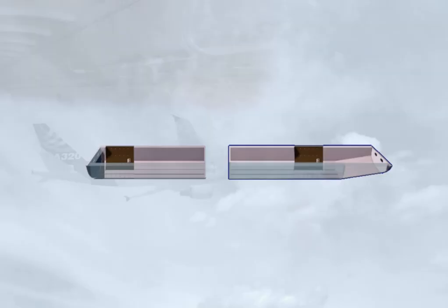The conditioning of the air in the forward and aft cargo compartments is fully automatic. The operation for these compartments is similar, so we will look at the forward cargo compartment, then we will see the differences for the aft.